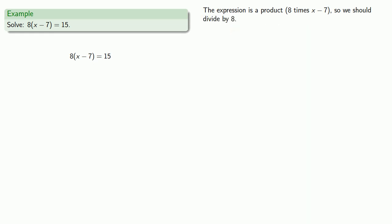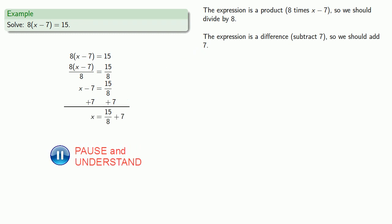So we'll divide both sides by 8. And now we have x minus 7 equals 15 over 8. And so we get our answer x equals 15 over 8 plus 7. We've solved this equation because we now have it in the form x equals stuff that doesn't involve x.